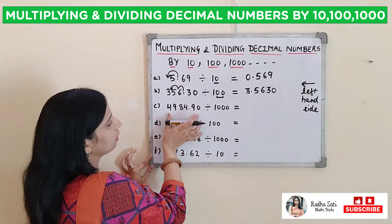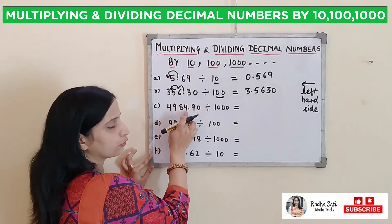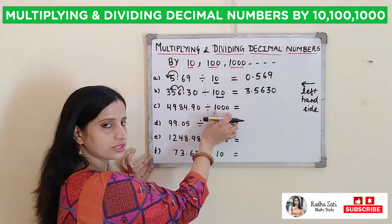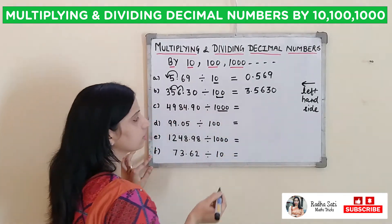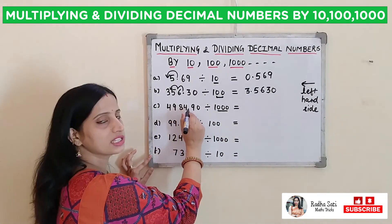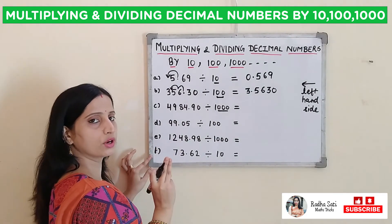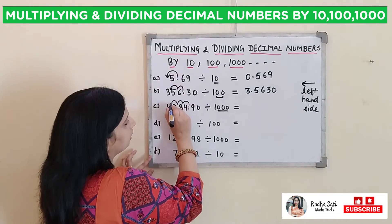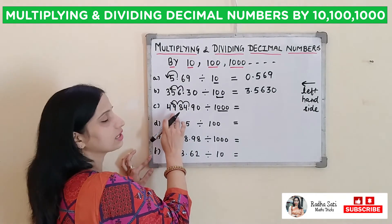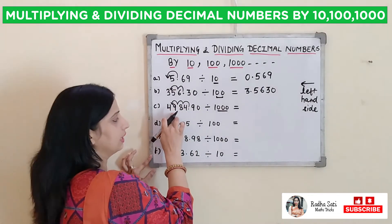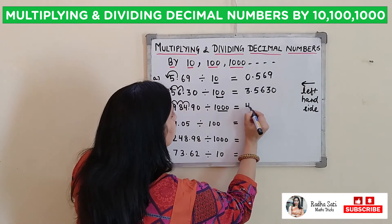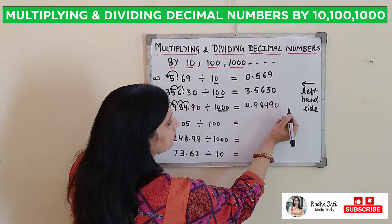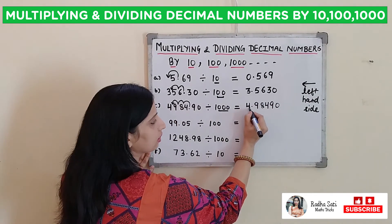Third one: 4,984.90 divided by 1000. In 1000 there are 3 zeros. This means our decimal will shift to the left hand side by 3 places — 1, 2, and 3. Now our decimal will come between 4 and 9, and our answer will become 4.98490.